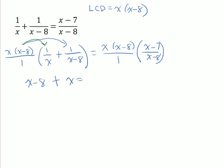On the other side of the equation, we have an x minus 8 that appears in both the numerator and denominator, so those divide out. That's going to leave us with x times x minus 7 to multiply out. When we do that multiplication, x times x gives us x squared, and x times negative 7 is negative 7x.